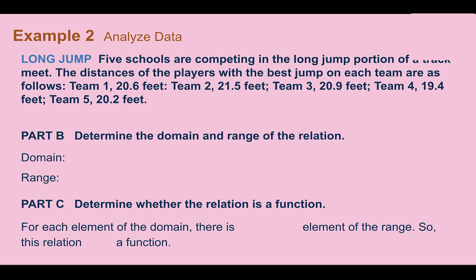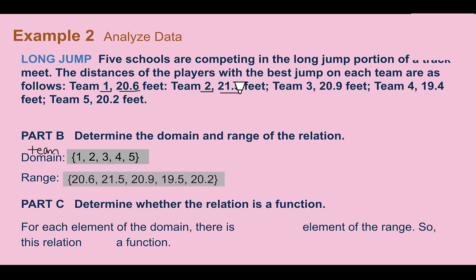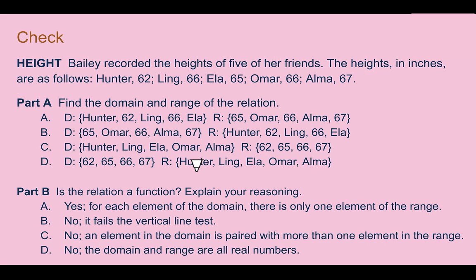The domain is your input — the independent variable or x-values — which is the team number: 1, 2, 3, 4, and 5. The range is what each domain value maps to: 20.6, 21.5, 20.9, 19.4, and 20.2. This is a function because each team only had one jump value. If each team were allowed to choose more than one jumper, it would no longer be a function.